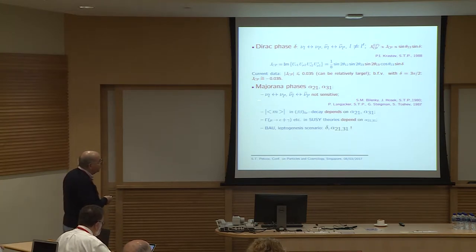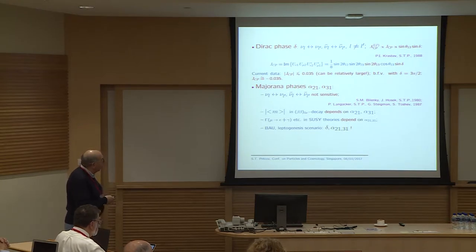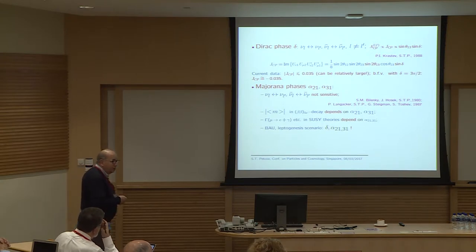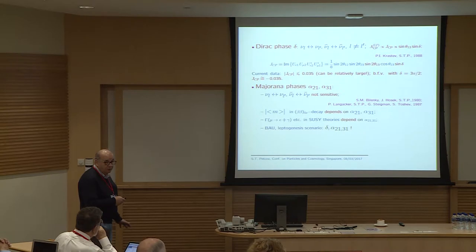Concerning the Majorana phases, we have no idea about their values. They play a very important role in processes in which the total lepton charge changes by two units, characteristic of the Majorana nature of massive neutrinos. Our interest in both Dirac and Majorana phases is stimulated by the intriguing possibility that these phases provide the CP violation necessary for generation of the baryon asymmetry of the universe, and may therefore be indirectly related to our existence.